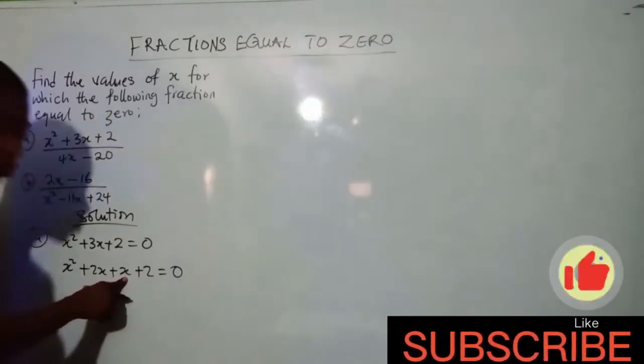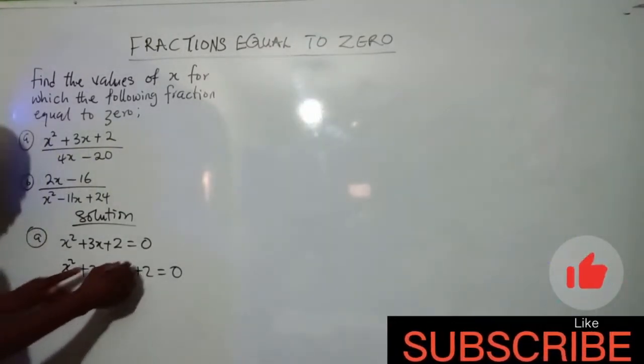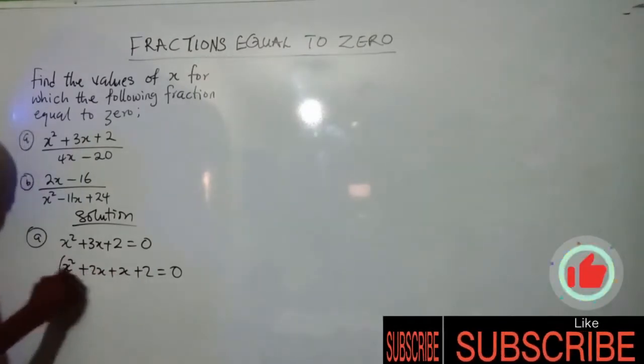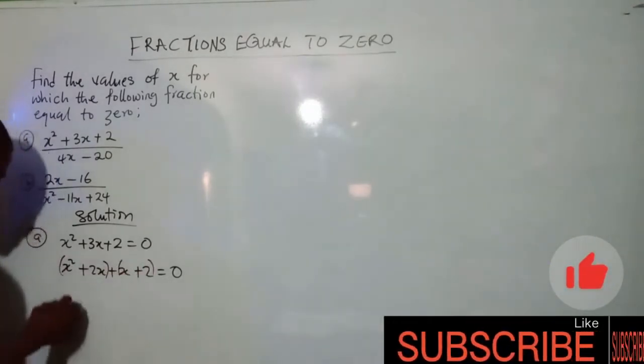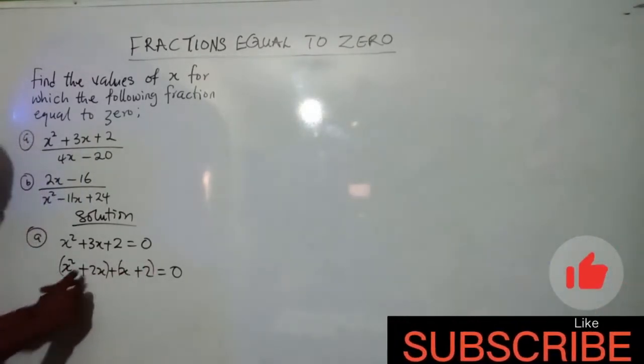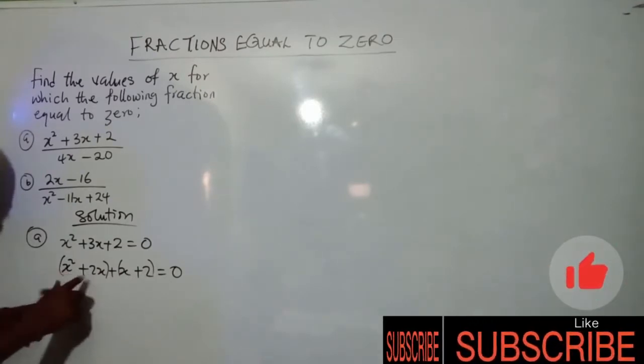So I will write x²+2x+x+2=0. x is the same as 1x. I'm going to group this together. Looking at them, what do they have in common? We have x. I have x here. I'll break it out.